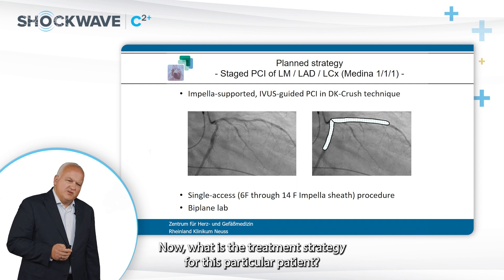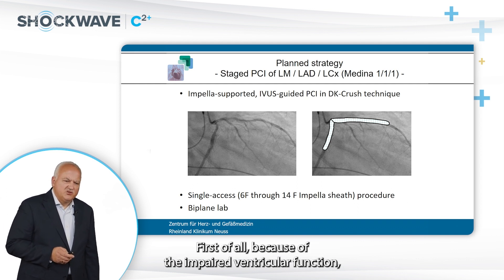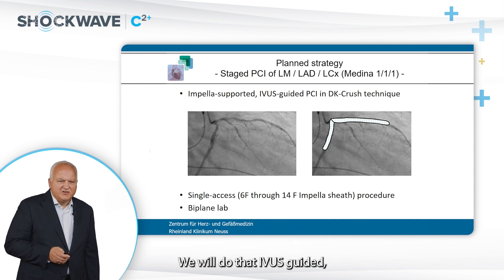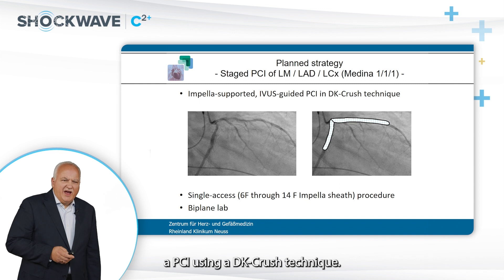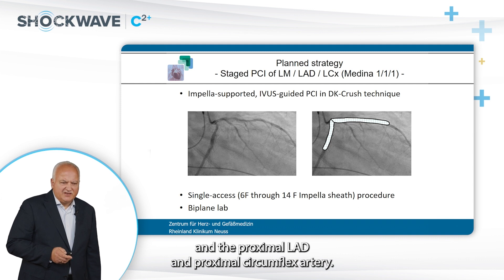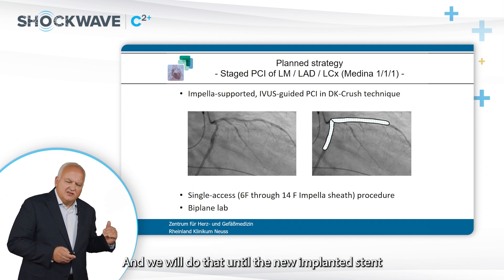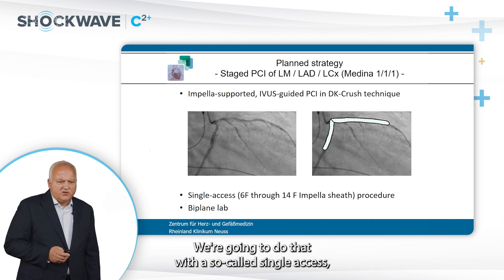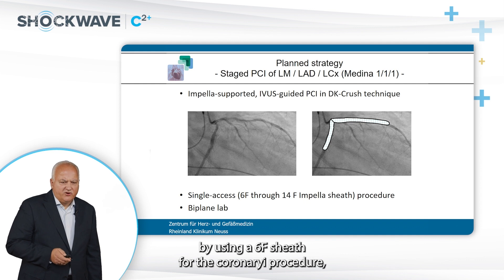The treatment strategy for this patient: because of impaired ventricular function, we intend to do an Impella-supported PCI procedure, IVUS-guided, using a DK-Crush technique — a two-stent technique to treat the left main, proximal LAD, and proximal circumflex artery — until the newly implanted stent reaches the formerly implanted one. This will be done via single access through the Impella sheath using a 6-French arm sheath for the coronary procedure.